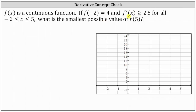And therefore, let's assume f prime of x equals 2.5. If f prime of x equals 2.5 over the closed interval from negative 2 to positive 5, this indicates the slope of the tangent line is always 2.5 over the closed interval. And therefore f of x would also have to be a line with a slope of 2.5 over this closed interval.